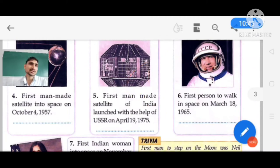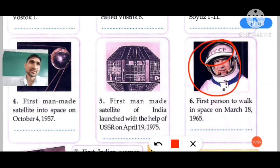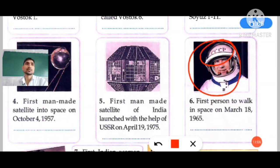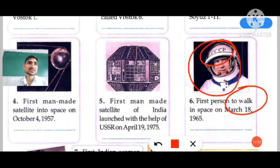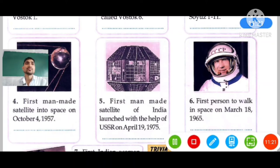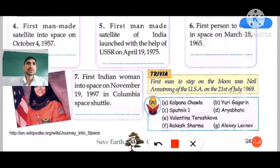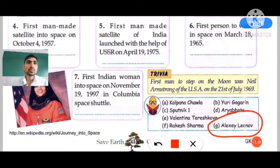The name of this satellite is Aryabhata — you have to choose this answer. Question number six: this person is very famous. On his cap you can see 'CCCP,' meaning this was a Soviet space mission. This is the first person who walked in space on March 18, 1965. The right answer from the help box is Alexei Leonov.